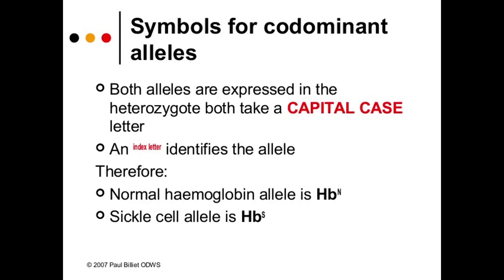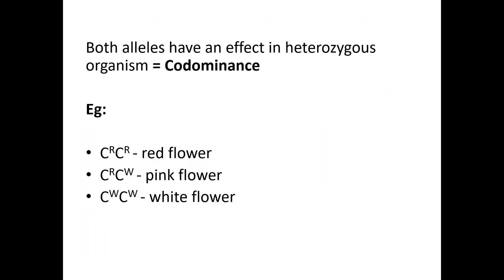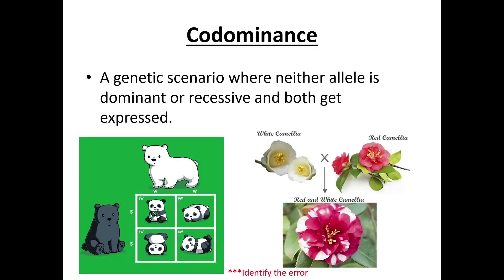For codominance alleles, both alleles are expressed in the heterozygote. Both take a capital letter and an index letter identifies the allele — for example, normal haemoglobin allele is HB^A. Both alleles have an effect in the heterozygote organism. For example: CR CR gives a red flower, CR CW gives a pink flower, and CW CW gives a white flower. Codominance is a genetic scenario where neither allele is dominant or recessive and both get expressed.